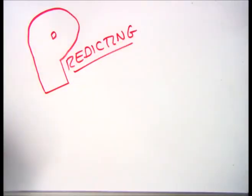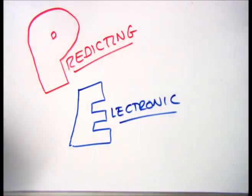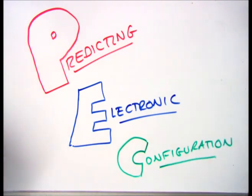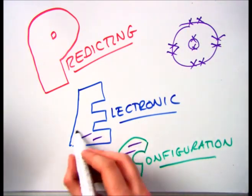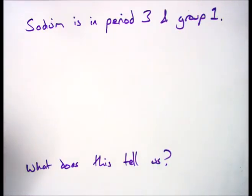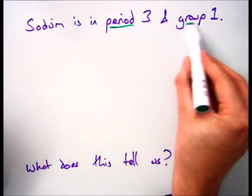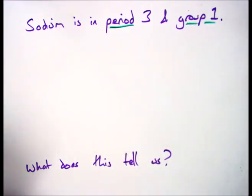Hello and welcome to this video on predicting the electronic configuration where we're going to look at how the electronic configuration can help you work out the period and the group from the periodic table. So if you had a question like this which says sodium is in period 3 in group 1, what does this tell us?